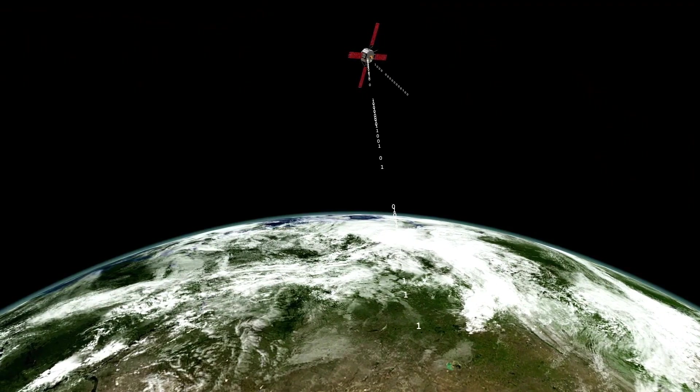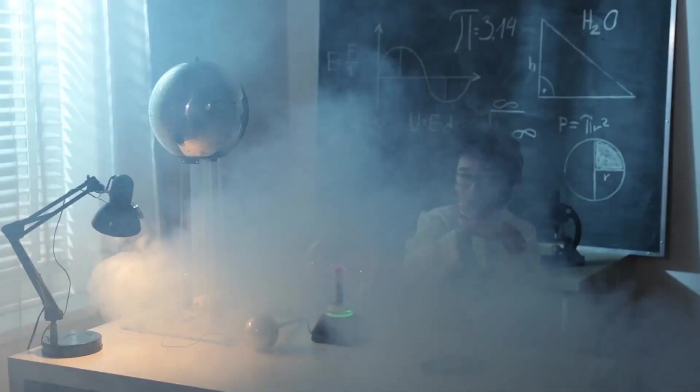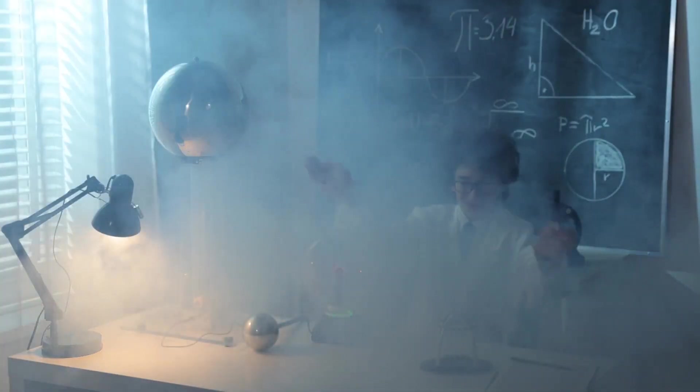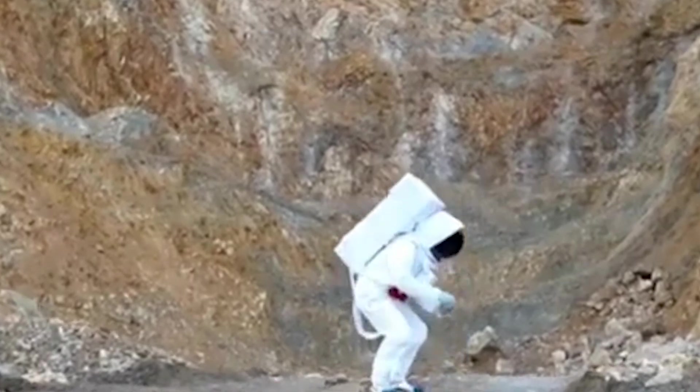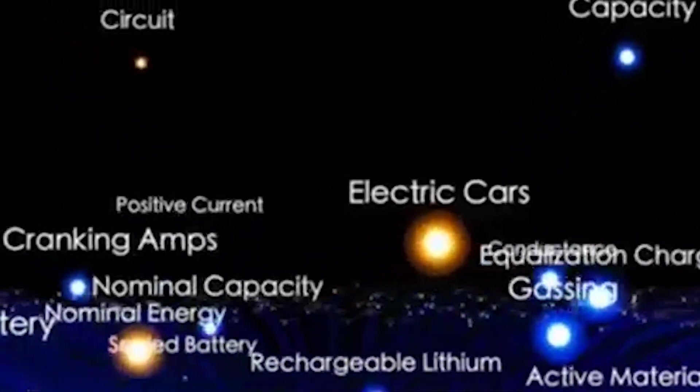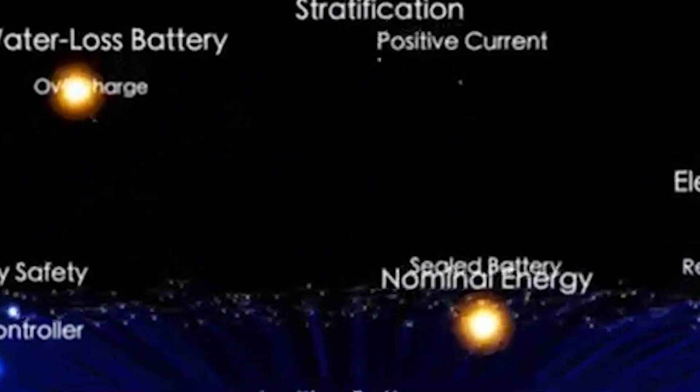As the years passed, the Voyagers ventured farther than anyone thought possible. Breaking through the heliosphere, the protective bubble created by the Sun, Voyager 1 crossed this boundary in 2012, followed by Voyager 2 in 2018, entering the uncharted realm of interstellar space. Even in the void between stars, Voyager continued its groundbreaking work.